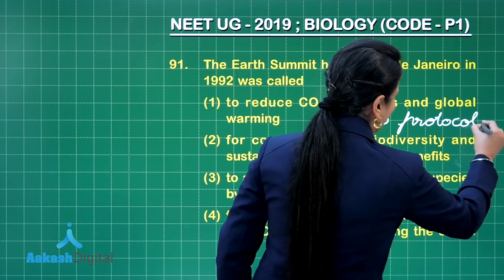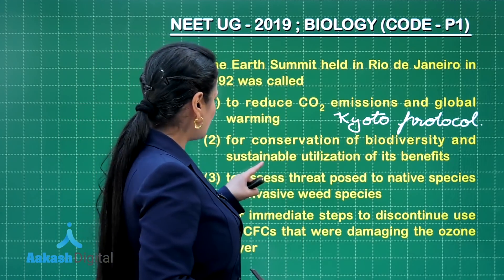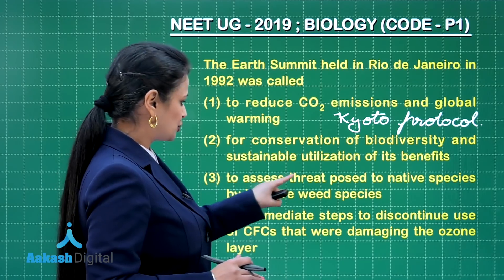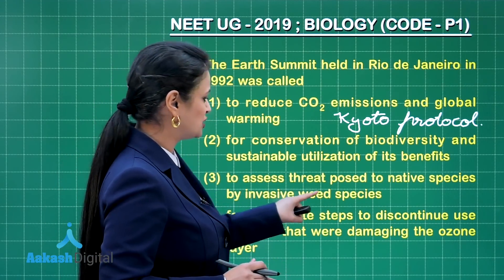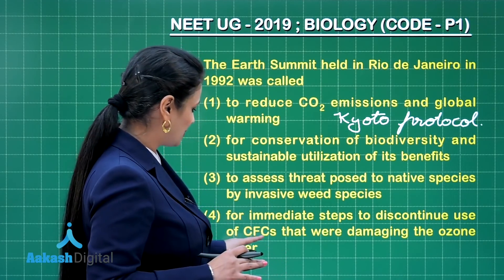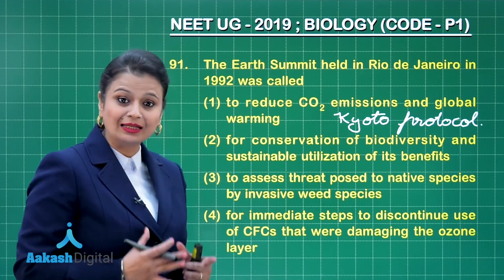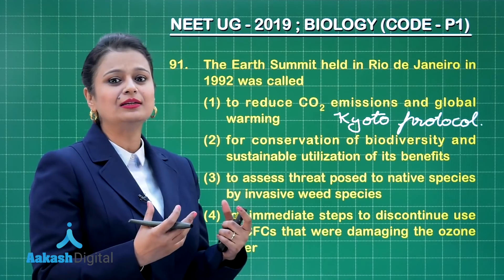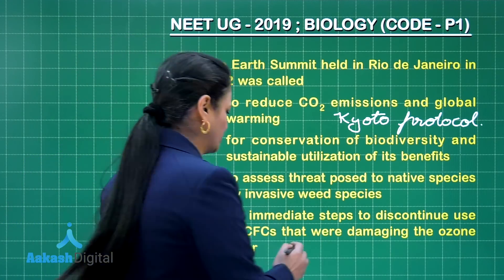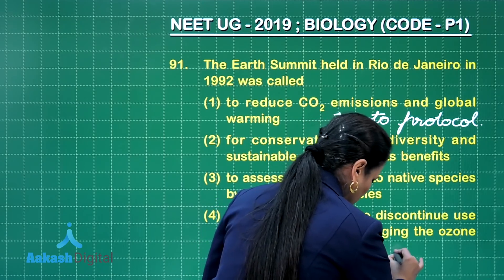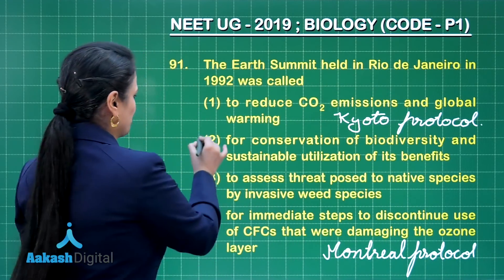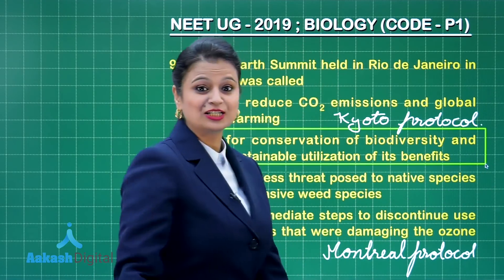The Kyoto Protocol is associated with CO₂ reduction. For conservation of biodiversity and sustainable utilization of its benefits — this is very right and is associated with the Earth Summit. Option C, to assess threats posed to native species by invasive species, is not related here. Option D, for immediate steps to discontinue use of chlorofluorocarbons damaging the ozone layer — the global agreement associated with reducing CFCs is not the Earth Summit but rather the Montreal Protocol. So the right answer to this question is option number two.